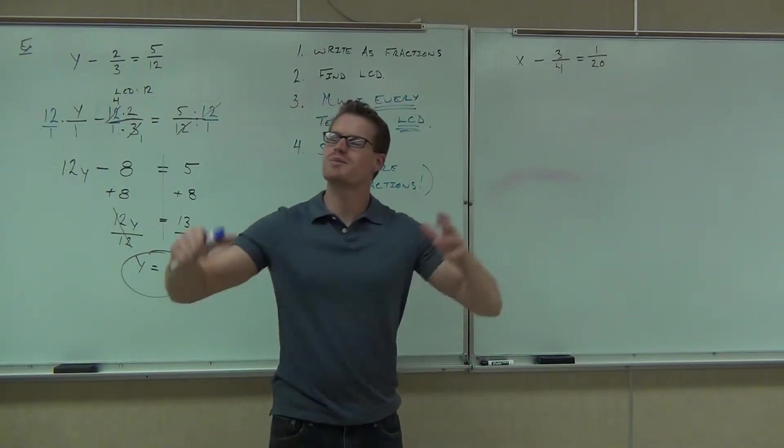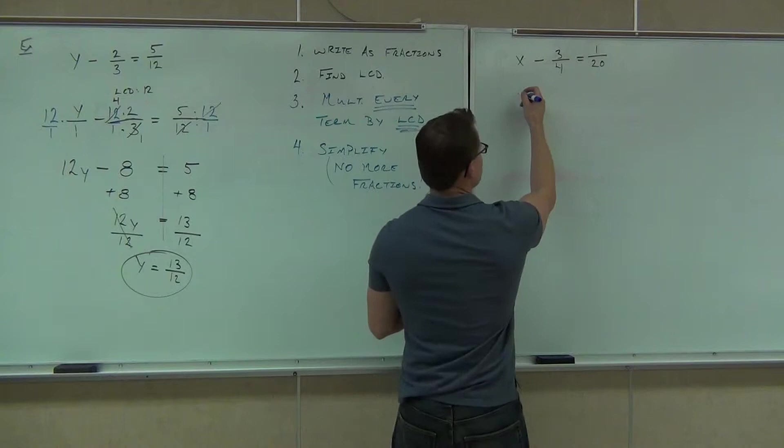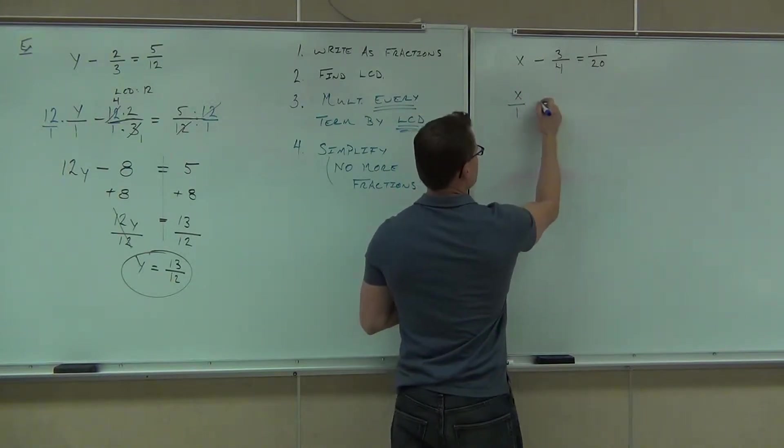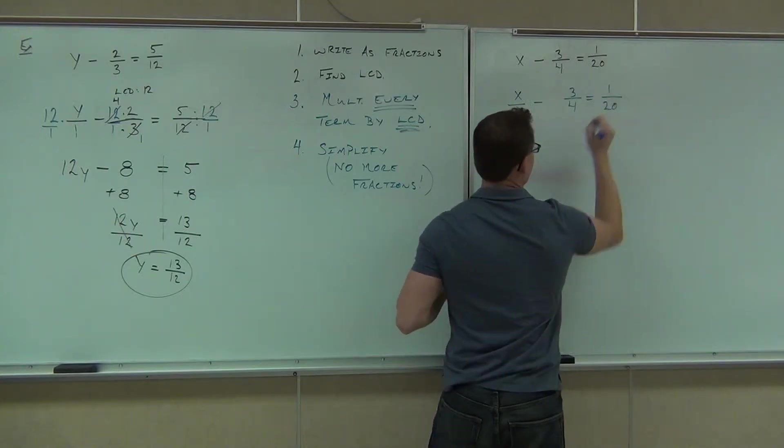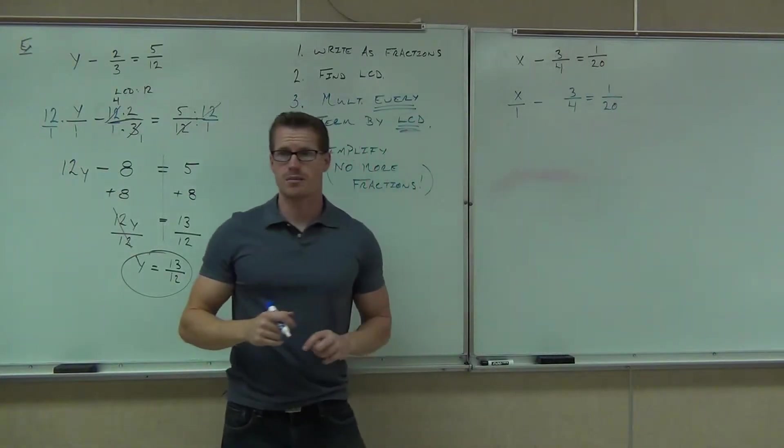So let's go ahead and do that here. The first step that you should have done is, of course, make everything into a fraction. So we need to see x over 1 minus 3/4 equals 1/20. Did you all do the first step?